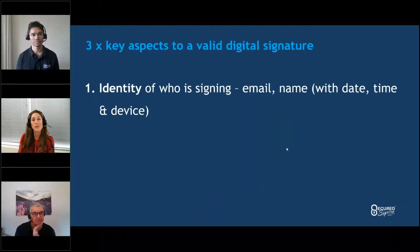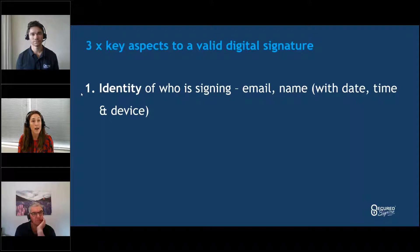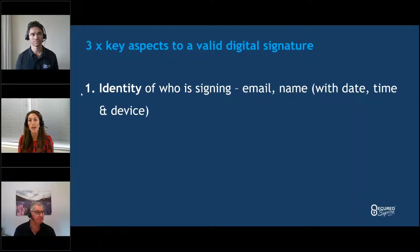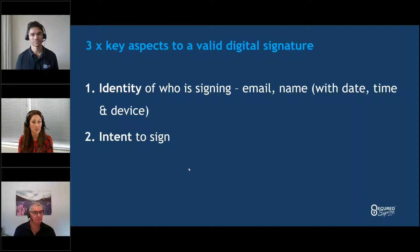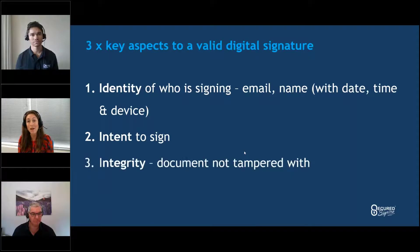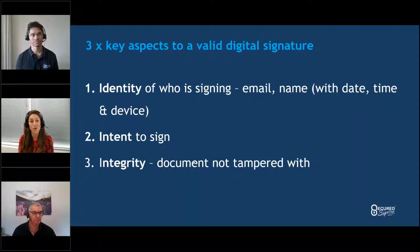There are three key aspects to a valid digital signature, typically referred to as the three I's. The first is the identity of who was signing, which is strongly linked to the email address matched up with the name, date, time, and device. The second is the intent to sign — that's what we'll be focusing on a lot today: how do you verify who was signing and their intent. The third is the integrity of the signature on the document and the fact that the document hasn't been tampered with, so it's a valid process.